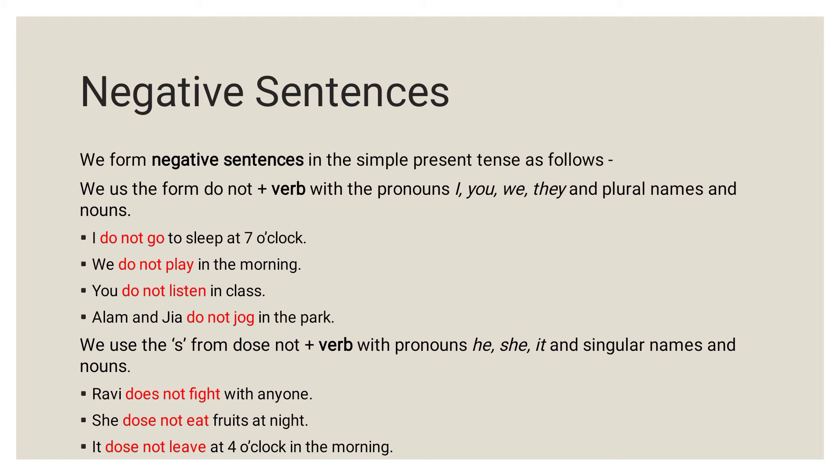In short: with pronouns I, you, we, they, or plural names and nouns, we use 'do not' plus verb. And if the pronouns are he, she, or it, and singular names and nouns are given, then we will use 'does not' plus verb. For plural — 'do not'; for singular — 'does not.'